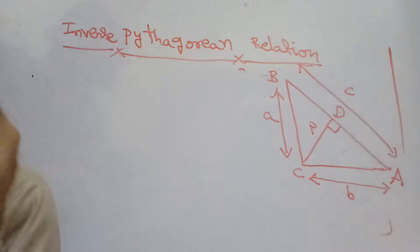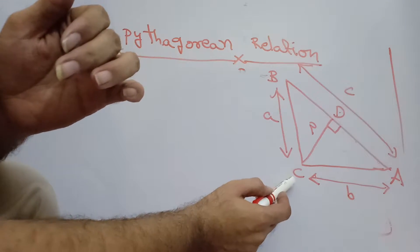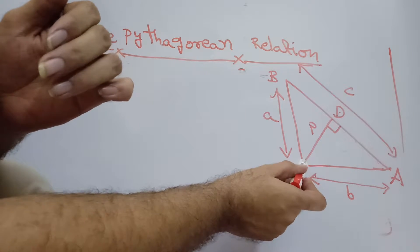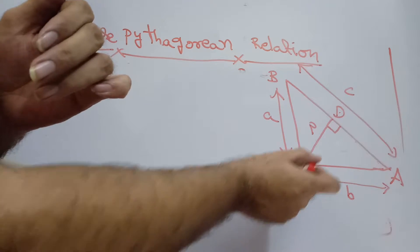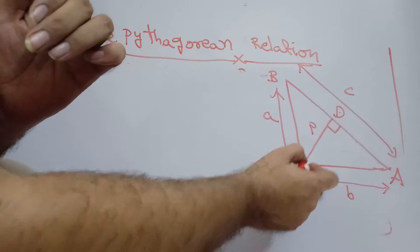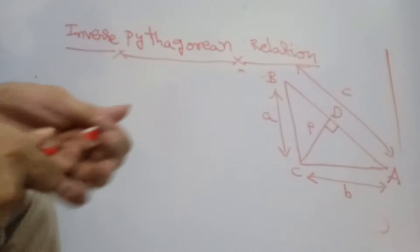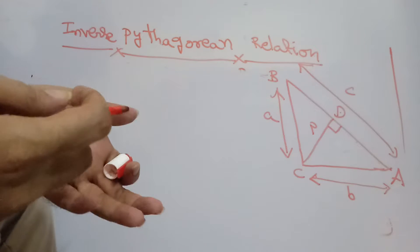Consider triangle ABC as shown here. This is vertex A, this is vertex B, this is vertex C. Angle C is 90 degrees. From the 90-degree vertex, we have dropped a perpendicular onto the hypotenuse AB, and the perpendicular CD is of length P. This perpendicular has many properties.